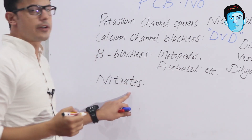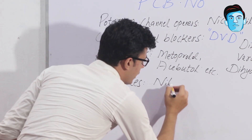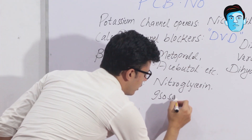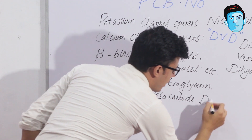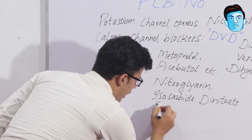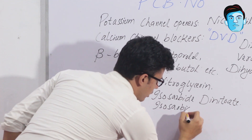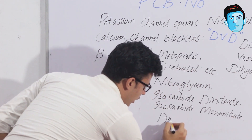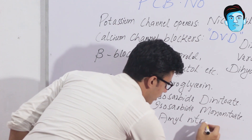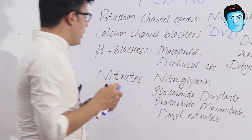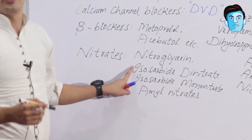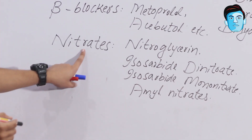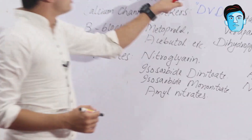Nitrates contain Nitroglycerin, Isosorbide Dinitrate, Isosorbide Mononitrate, and Amyl Nitrate. That covers all the nitrates of the anti-anginal drugs.